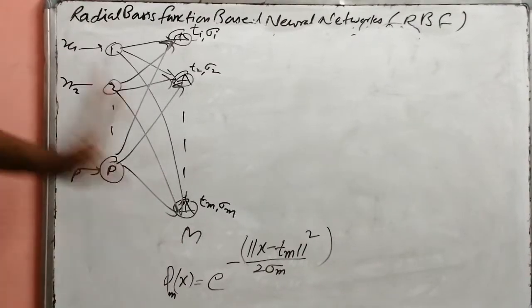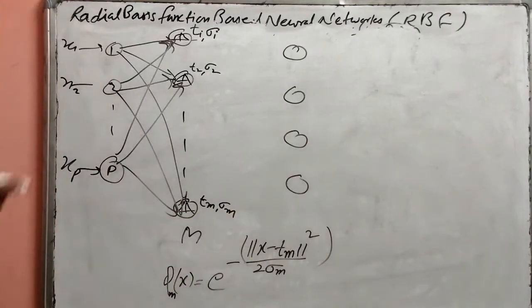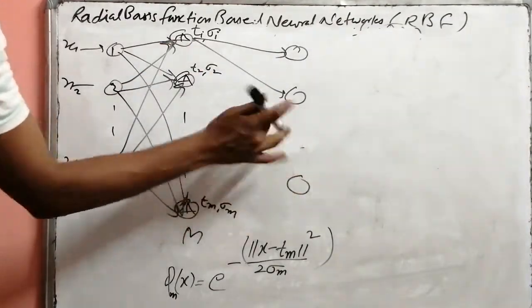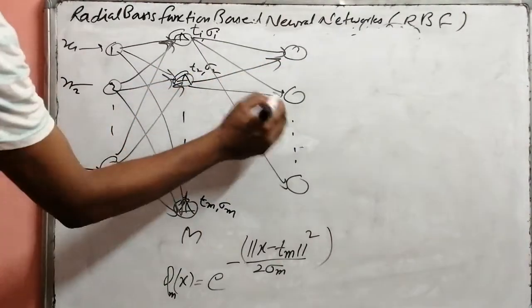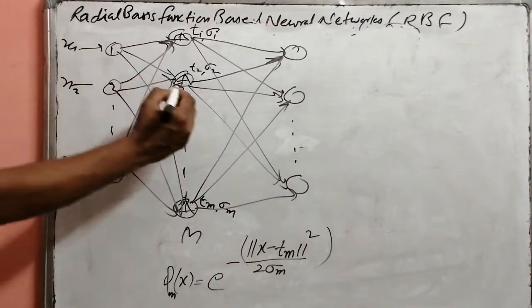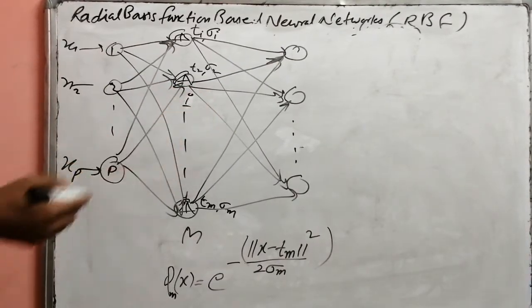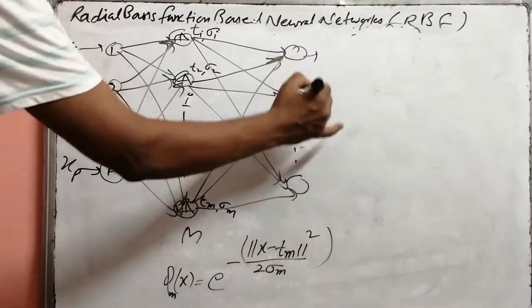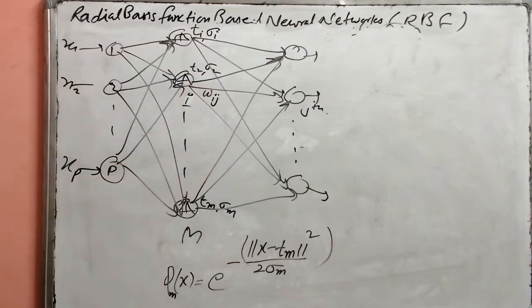The output generated by this layer then goes to the next output layer. The Gaussian layer neurons are connected with the output layer neurons. Here, the i-th neuron in the hidden layer connects to the j-th neuron in the output layer. The weight between them is represented as w(i, j).